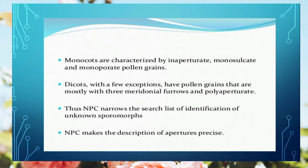Monocots are inaperturate — no aperture is found in them — and have a single sulcus structure. Dicots have a single pore. In this way, unknown pollen and spores can be classified by deeply analyzing and studying their features under the microscope, which helps in identification and classification.